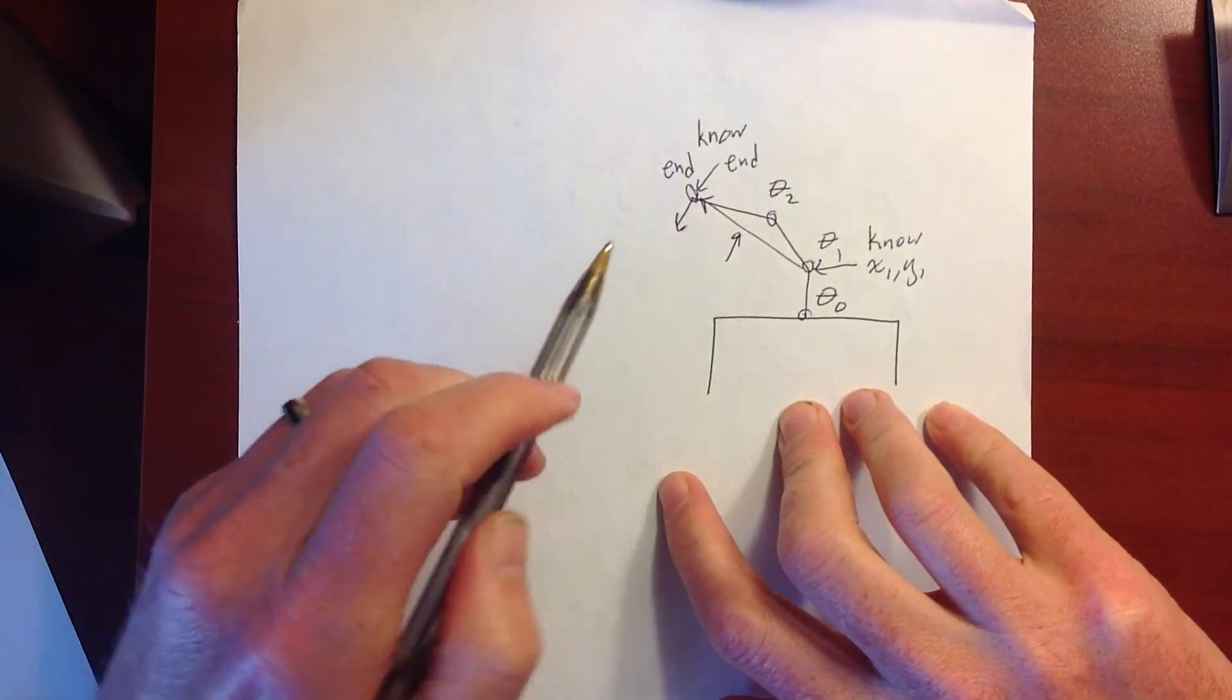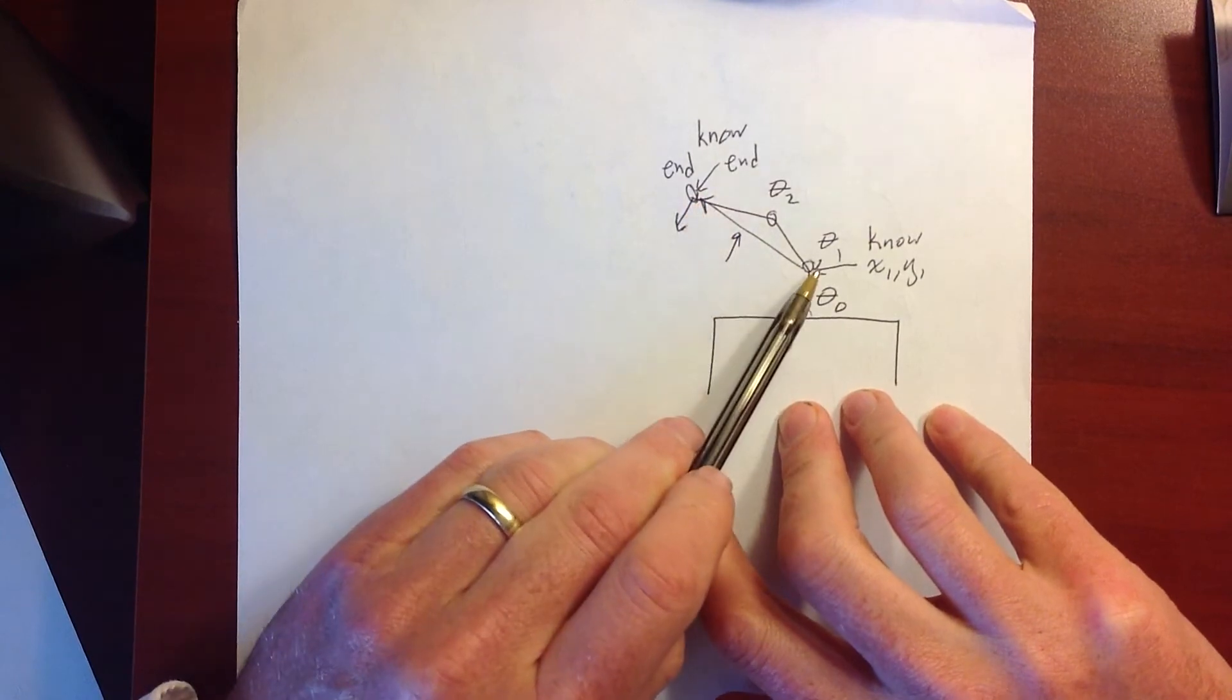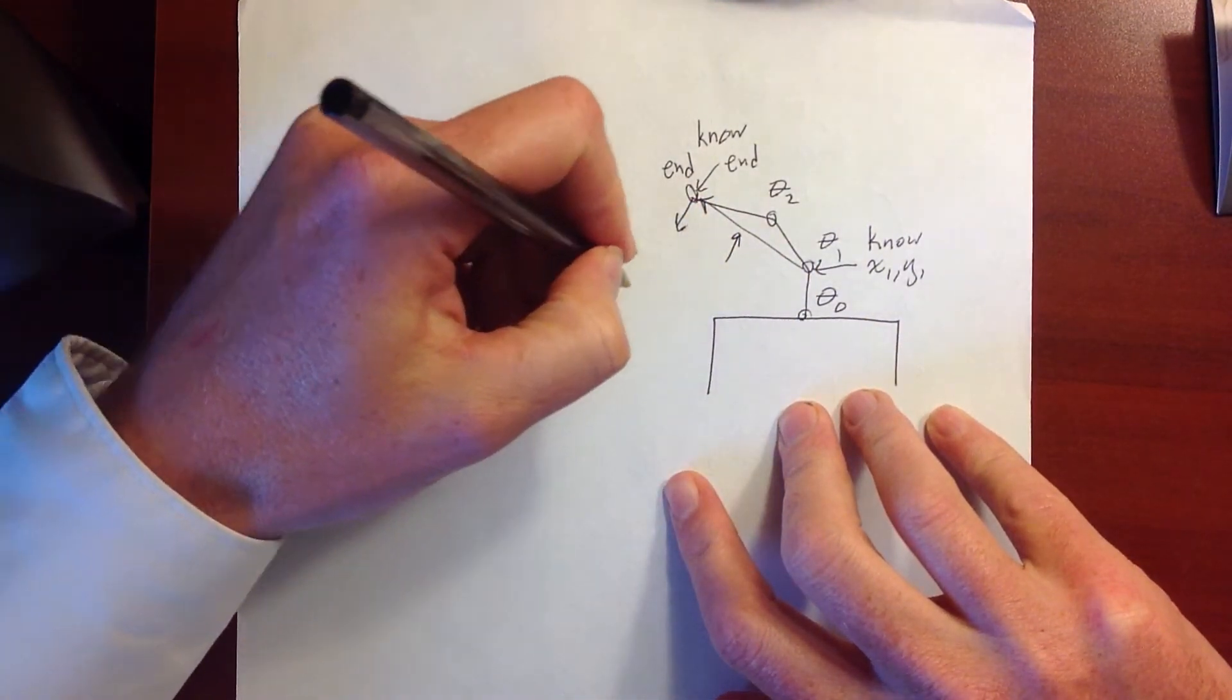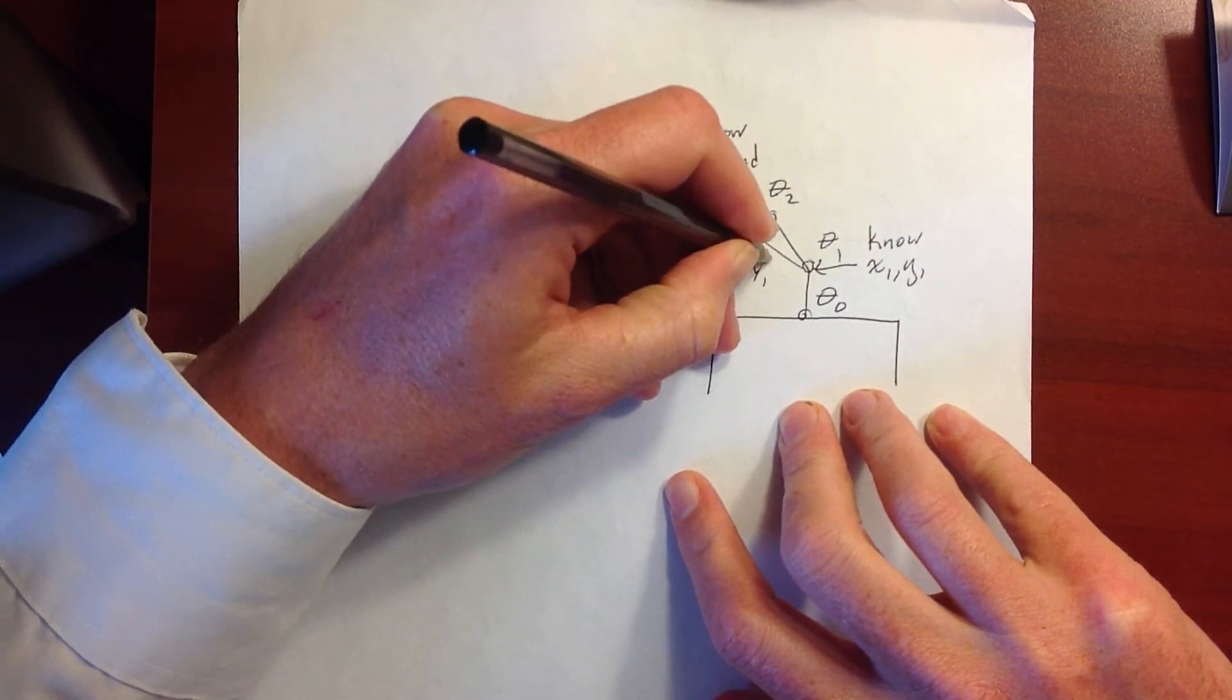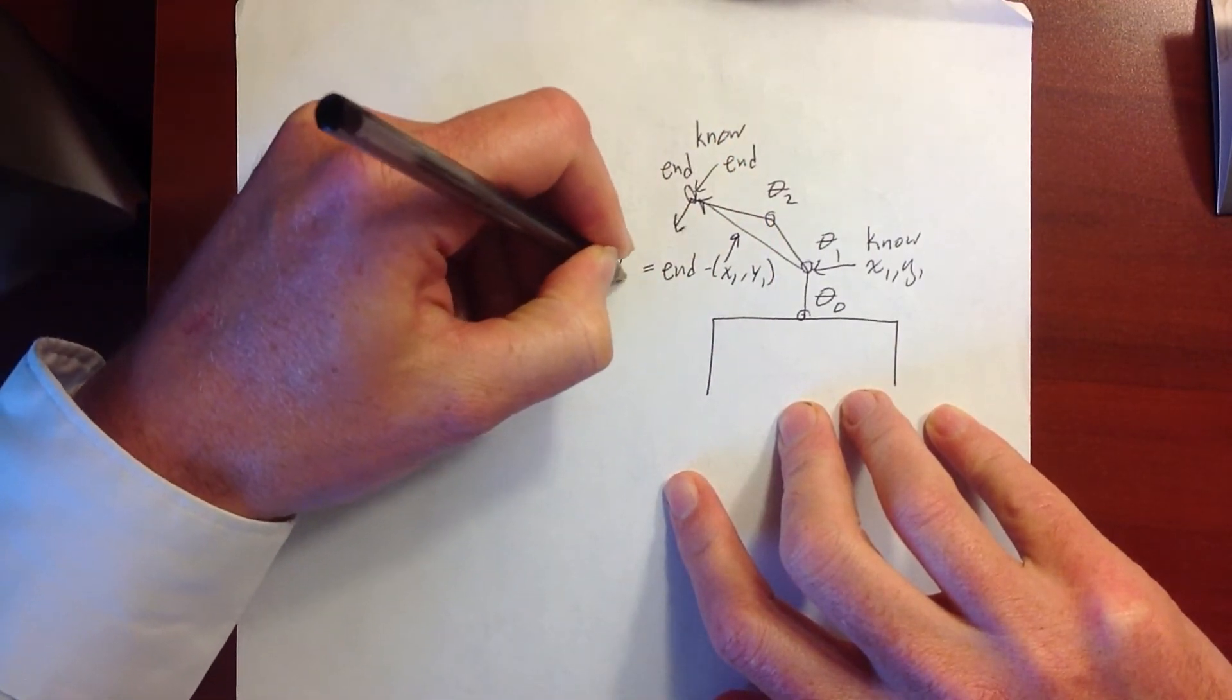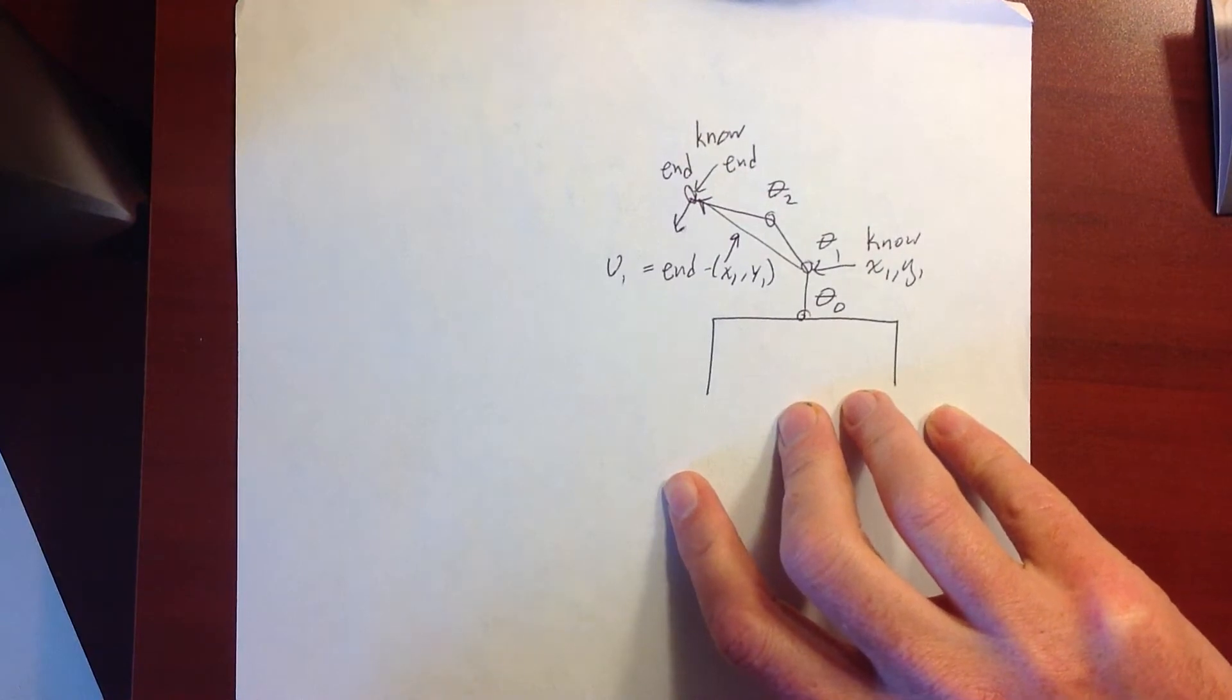So this vector right here is given by taking the end position minus x1 and y1. So this is end minus x1, comma y1. And I'll just call that vector v1 just because it will be convenient to have a name for it.